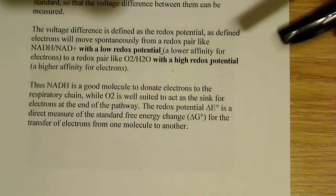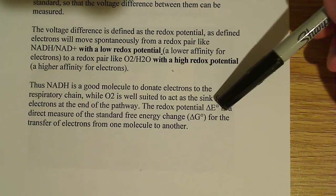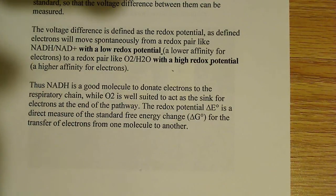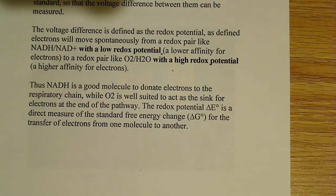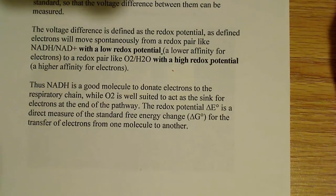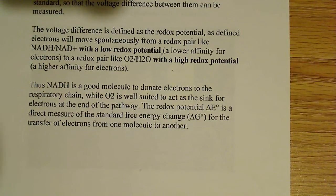The redox potential — which you might see in your book as delta E — is a direct measure of the standard free energy change. We use this redox potential to get a direct measure of the standard free energy change, which is important because free energy change determines whether or not these reactions are spontaneous. It tells us whether it's favorable to transfer electrons from one molecule to another. As you go through the respiratory chain, you'll notice that the molecules taking up the electrons in each complex have higher and higher affinities for electrons — and that's going to be a common theme.